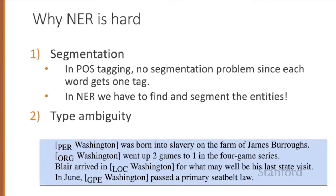Unlike part of speech tagging, where there is no segmentation problem since each word gets one tag, the task of named entity recognition is to find and label spans of text, and is difficult partly because of the ambiguity of segmentation. We need to decide what's an entity and what isn't, and where the boundaries are. Indeed, most words in a text will not be named entities. Another difficulty is caused by type ambiguity — for example, the name Washington can refer to the educator Booker T. Washington, or a sports team, or a location, or a geopolitical entity.